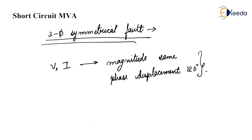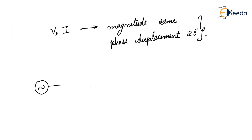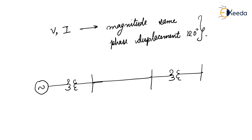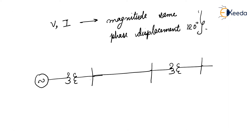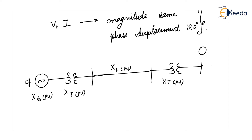We assume a single line diagram consisting of Transformer 1, a transmission line, and Transformer 2. This is a single line diagram where the generator, transmission line, and transformer reactances are given in per unit — generator reactance in per unit, transformer reactance in per unit, transmission line reactance in per unit, and Transformer 2 reactance in per unit. Suppose at Bus 1, a 3-phase symmetrical fault occurs.